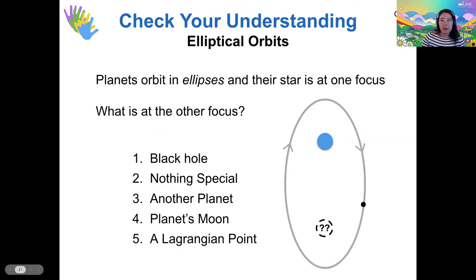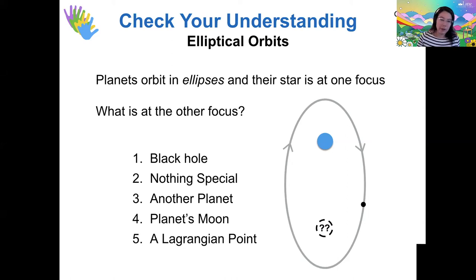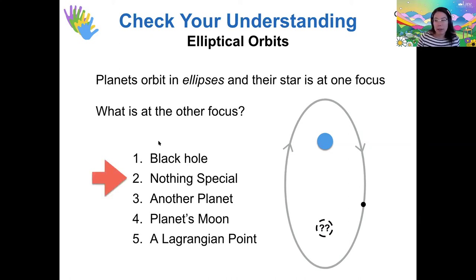So I told you that there are two focuses, foci, of an ellipse. So the Sun is at one of the focuses for the orbits of planets, but what's at the other focus? Yeah, vast majority of you voting for option number two. That's exactly right. There's nothing special at the other focus. It's just a mathematical fact that ellipses have two focuses. But mathematically, while there's another focus, there doesn't have to be anything going on there. So the Sun is at one focus and that's it. It's just the gravity between the Sun and the planet that keeps the planet in orbit around the Sun. So it doesn't depend on anything being at that other focus. We'll talk more about gravity next week.